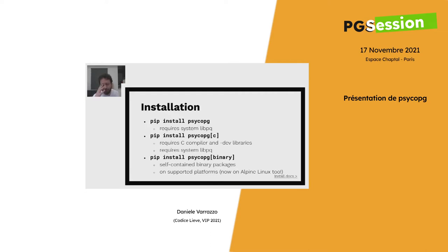There is also a binary package that is particularly useful for Docker systems where you create an image from scratch in a reduced environment. This package comes with a pre-compiled C extension plus all its dependent libraries — including libpq and libssl — as a complete self-contained system. It has recently also been made available for Alpine Linux, which means several base Docker images can make use of it to create very small images.